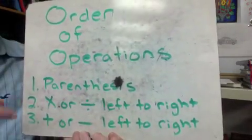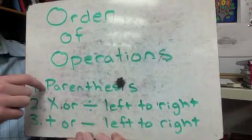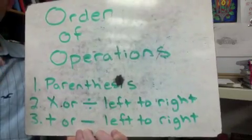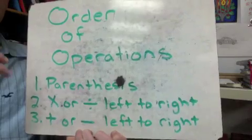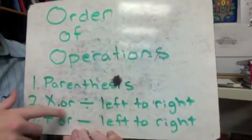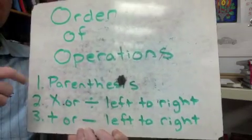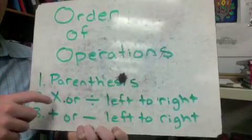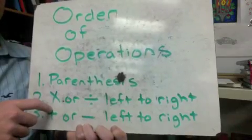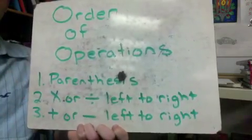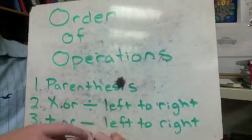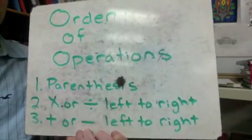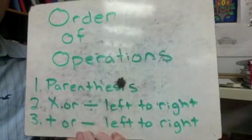We're going to start with parentheses. Any time you see a set of parentheses, you need to do what's inside them first. Second is multiply or divide from left to right. This can be confusing because some students think multiplication comes first and then division — not true. If division comes first from left to right, you take care of that first. If multiplication comes first, you take care of that.